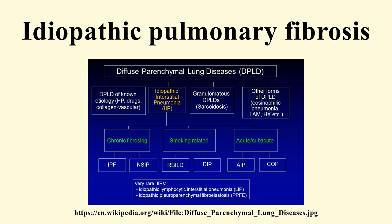Terms such as mild, moderate, and severe are sometimes used for staging disease and are commonly based on resting pulmonary function test measurements. However, there is no clear consensus regarding the staging of IPF patients and the best criteria and values to use. Mild to moderate IPF has been characterized by the following functional criteria: forced vital capacity of 50%, DLCO of 30%, and 6-minute walk test distance of 150 meters.